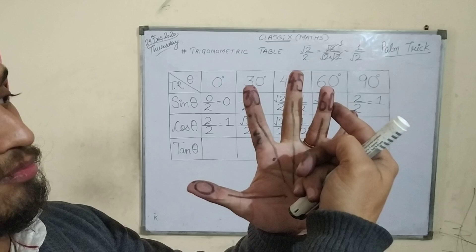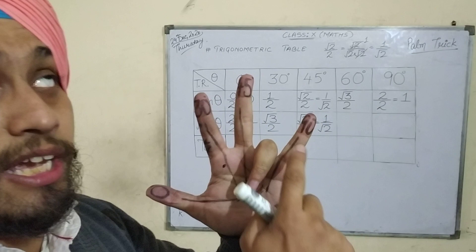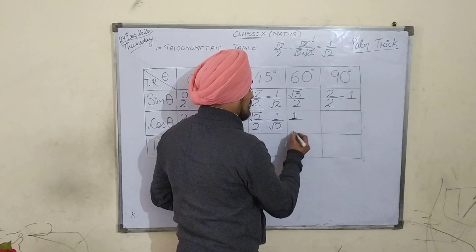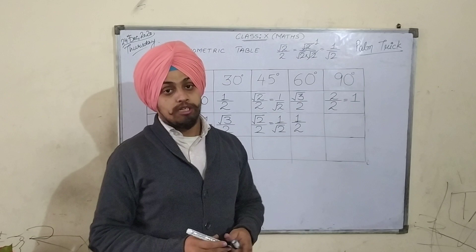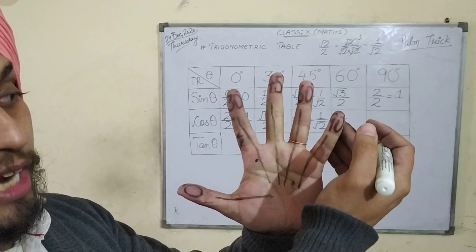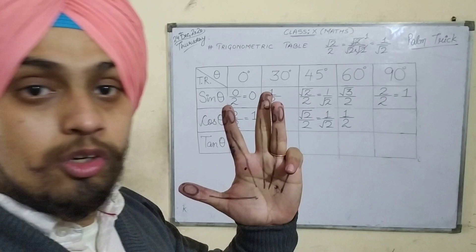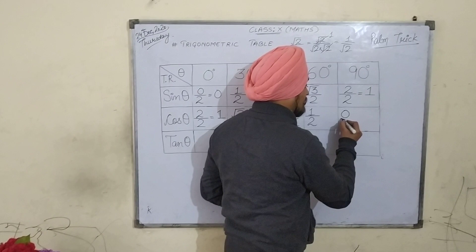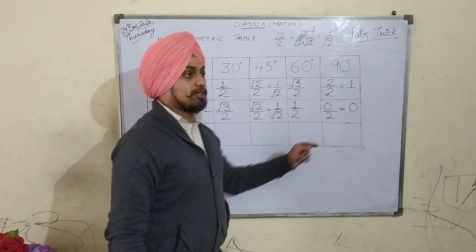Similarly for cos 60 degree, I will bend this finger on which 60 degree is written and see to the right of it — only one finger. So I will take the square root of 1, which is 1, giving 1 upon 2, which is the value of cos 60 degree. Now for cos 90 degree I will bend this finger and see how many fingers are to the right of it — no finger, or 0 fingers. Take the square root of 0, that is 0, and divide by 2. So 0 by 2 is 0, which is the value of cos 90 degree.